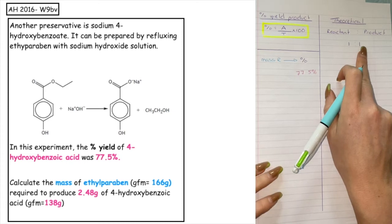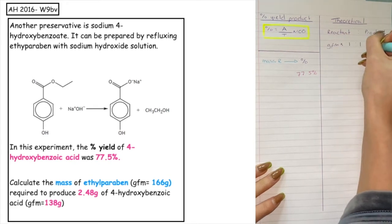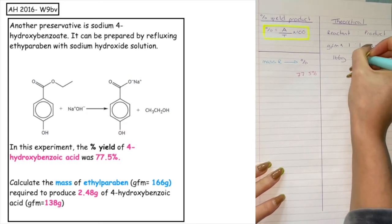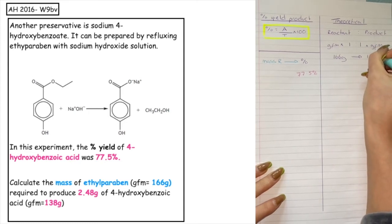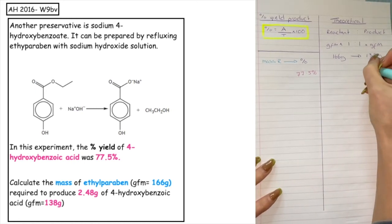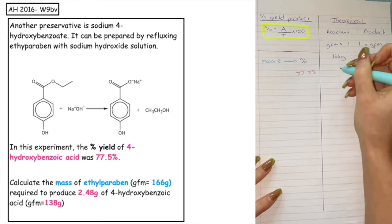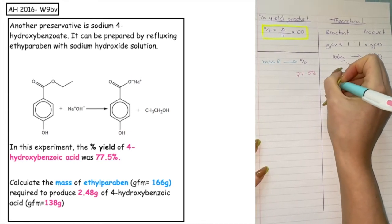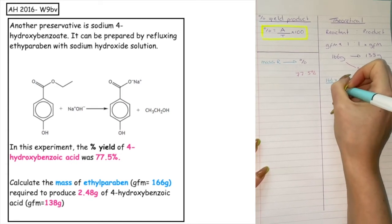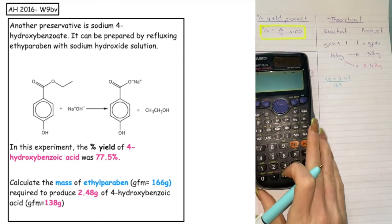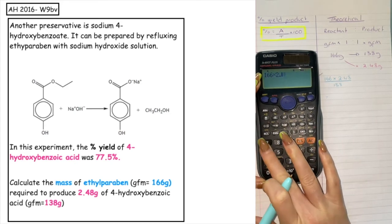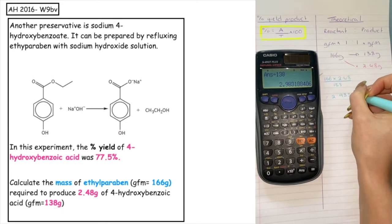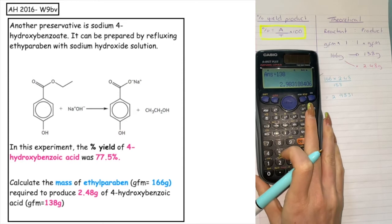Because the question works in mass, we know mass equals number of moles times GFM, so we multiply both sides by GFM to get into the appropriate unit. The GFM of our reactant is given as 166 and the GFM of our product is given as 138. We want to produce 2.48 grams, so we proportionalise to work out the theoretical mass of reactant needed: 166 times 2.48 divided by 138. Putting that into the calculator gives a theoretical mass of 2.9831 grams. We keep this in the calculator for our final calculation.